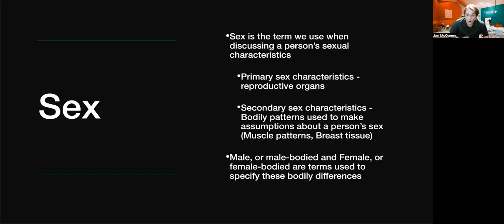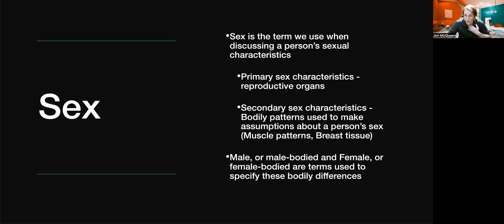Secondary sex characteristics can be understood as bodily patterns used to make assumptions about a person's sex. We use these to make quick evaluations, though they can lead to misrepresentation and mislabeling, so you should always ask what pronouns someone uses. Examples include Adam's apples for men and breast tissue for women. You can also point to development of muscle tissue in boys at puberty, and how their voices change — that voice cracking due to development of the Adam's apple.